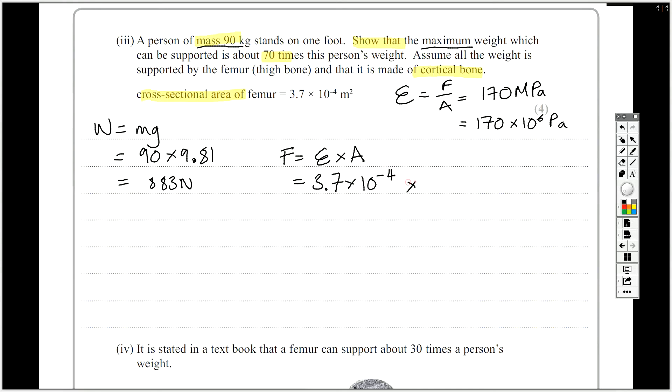Yeah, times. So I've done it the way around but it doesn't matter as a product. And that gives me about 62,900 newtons. That's the maximum. So to show that that is about 70 times I just do 62,900 divided by 883 and that is actually 71 times roughly, which is approximately 70 times.